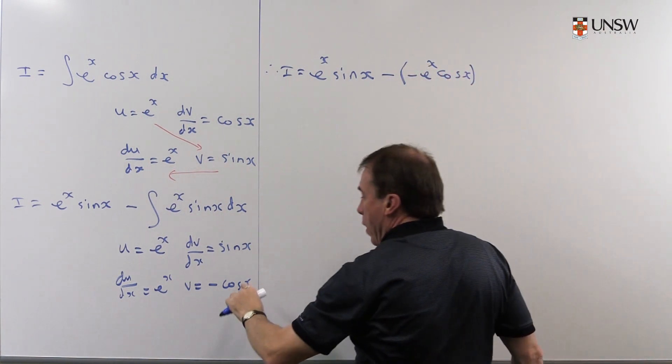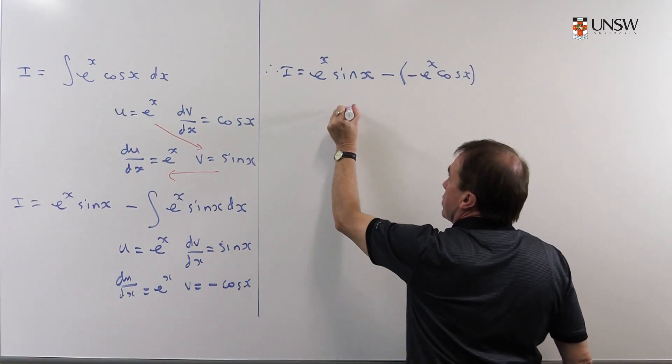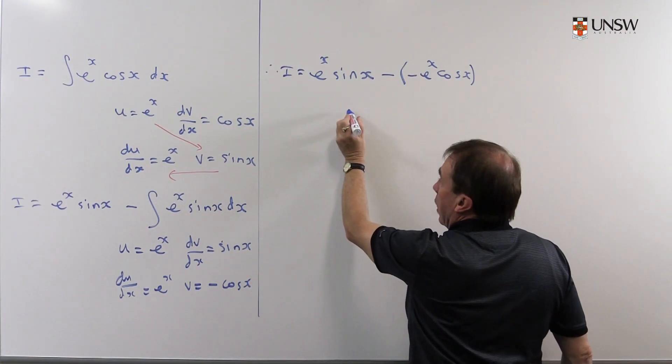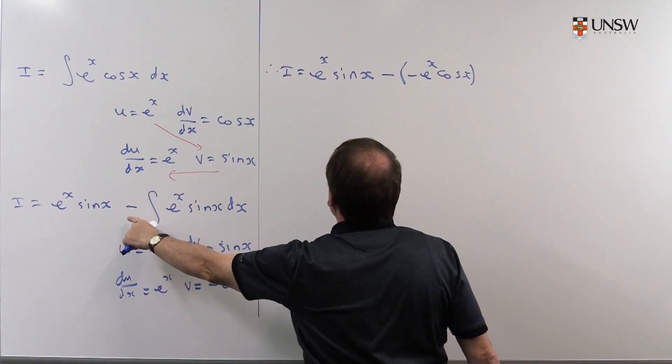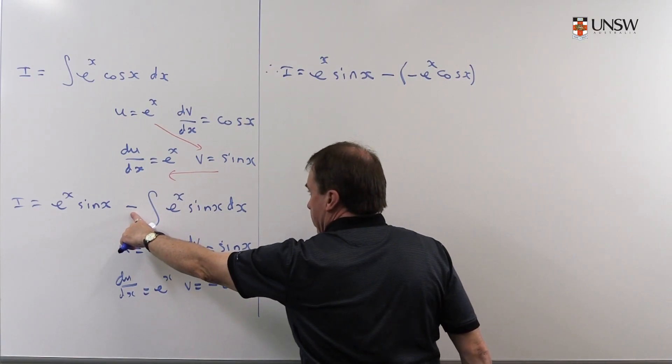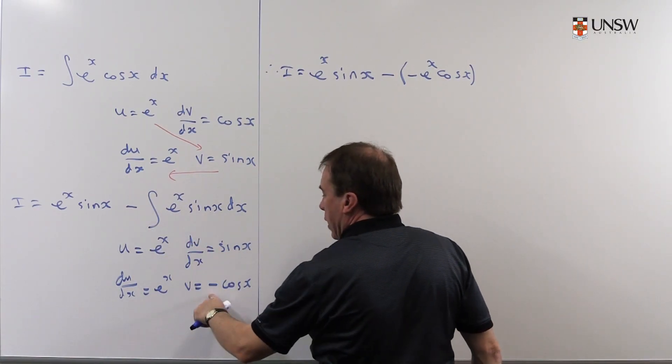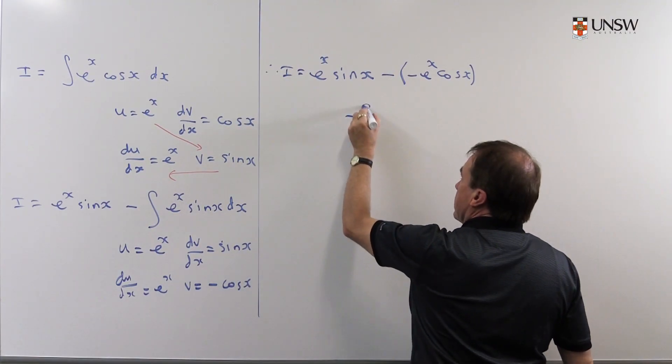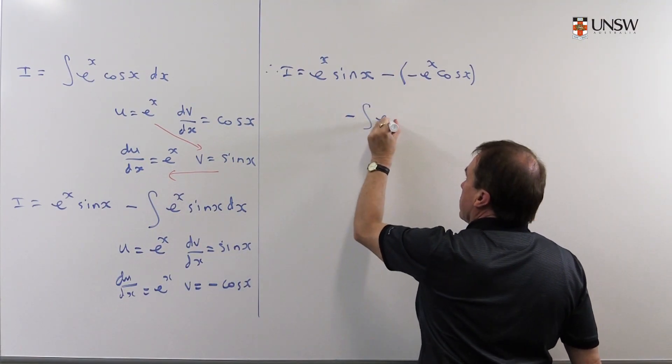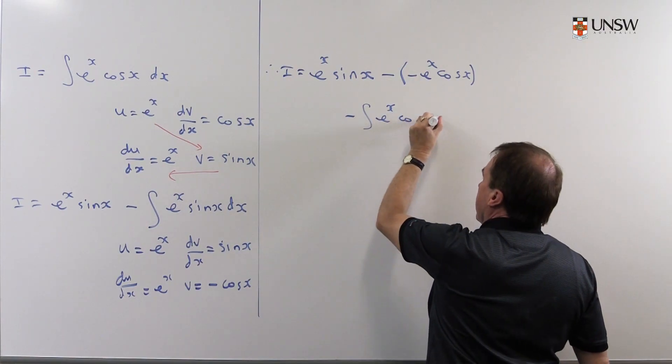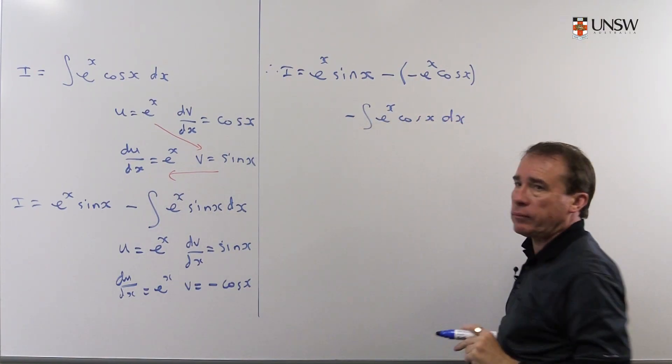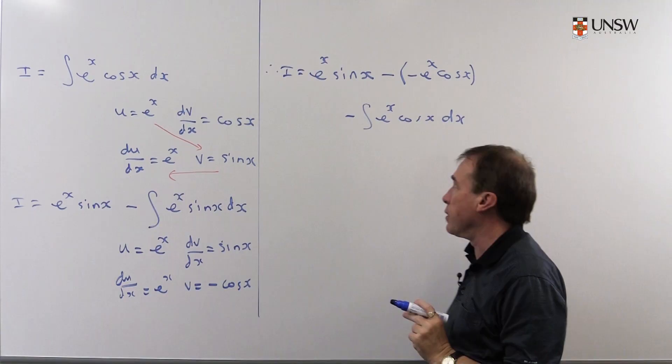And then I get minus the integral of that times that. So the two minuses will give me a plus. I've got to be careful with the signs here. I get a minus here. I get a minus from the formula and another minus there gives me three minuses. So that's minus integral e to the x cos x dx. So just watch the signs very carefully there with that.